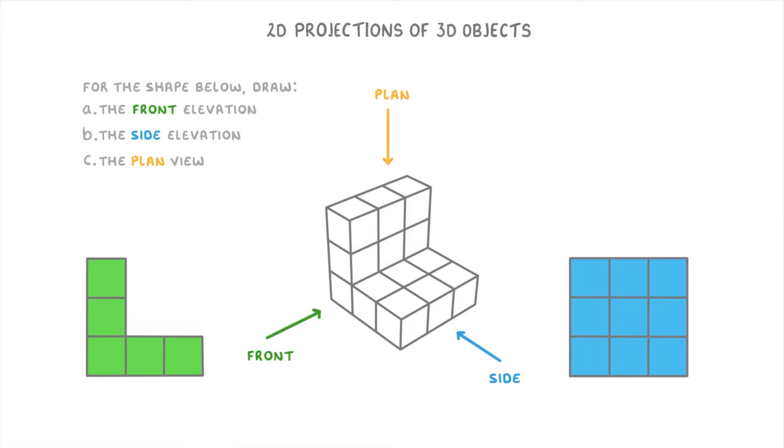And lastly from above you'll be able to see these 9 squares. So the 2D plan projection would actually look exactly the same as the side elevation.